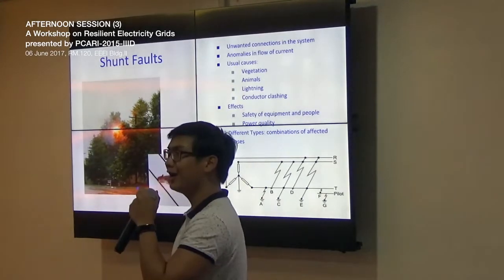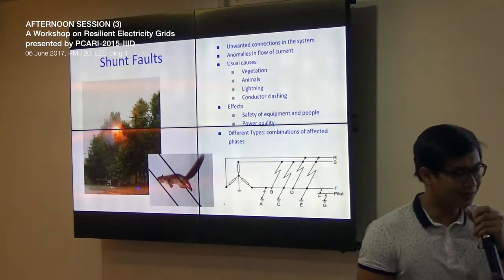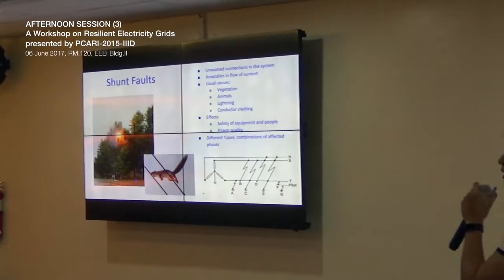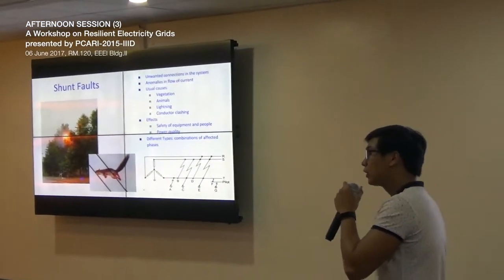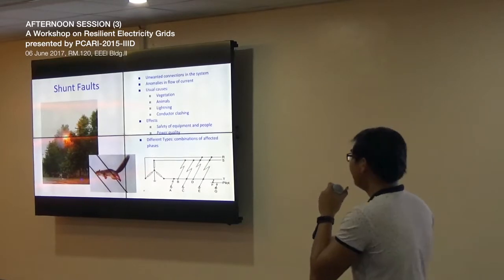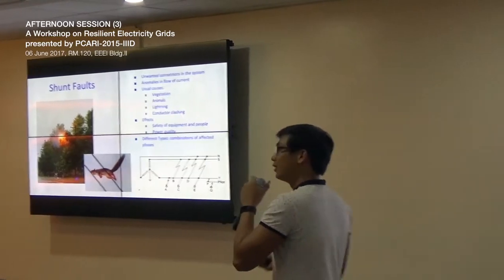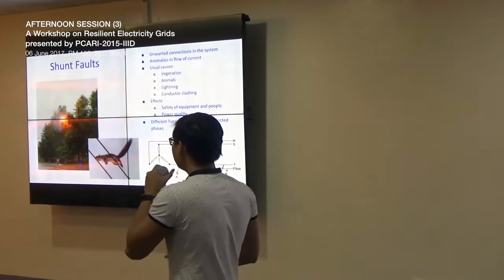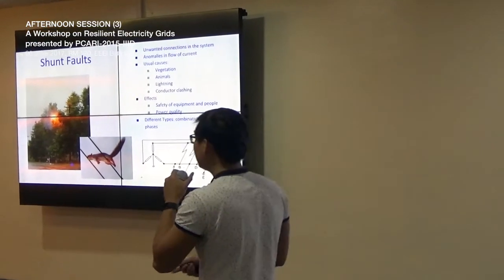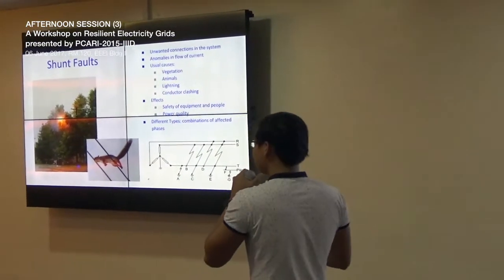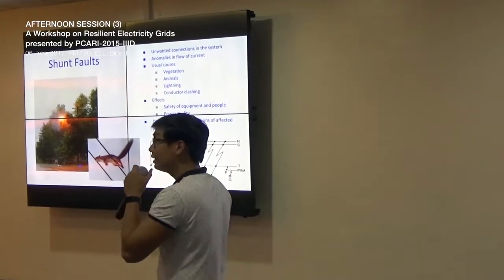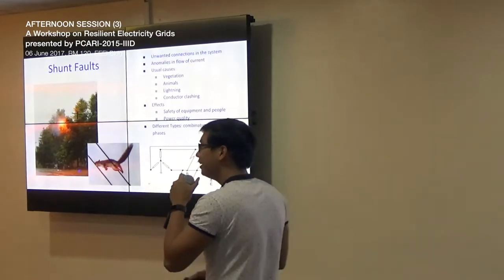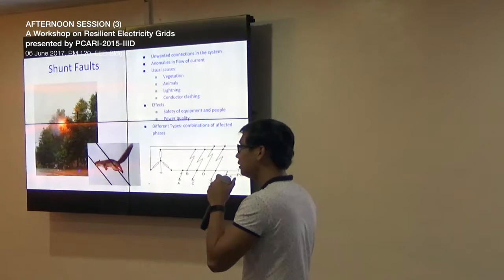Shunt faults are unwanted connections — short circuits — in the system that cause anomalies in the flow of current. The usual causes are vegetation, animals, lightning, and conductor clashing. These faults have negative effects on the safety of equipment and people, and they induce power quality disturbances. A certain interruption in the system may lead to huge economic losses for consumers.